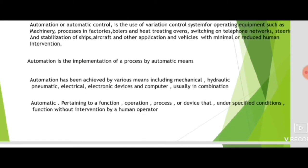Automation, or automatic control, is the use of various control systems for operating equipment such as machinery, processes in factories, boilers and heat treating ovens, switching on telephone networks, steering and stabilization of ships, aircraft, and other vehicles, with minimal or reduced human intervention.